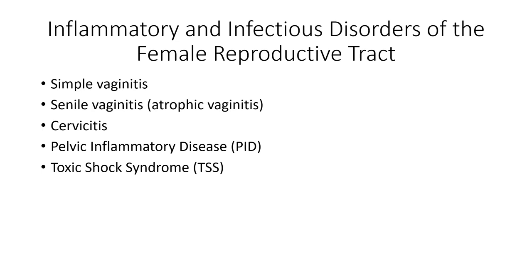An extremely important point: PID can cause infertility due to scarring that blocks the fallopian tubes. The most common complication associated with PID is sterility. Remember how PID leads to sterility — the scarring blocks the fallopian tubes.